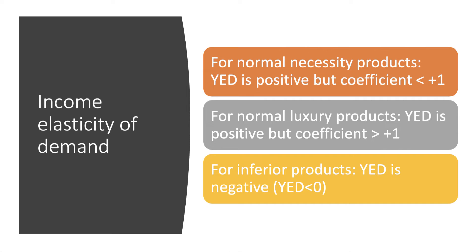For inferior goods, the income elasticity of demand is negative — examples include own-label foods, bus transport, and cigarettes. The coefficient will be less than zero. Again, an important exam point: always remember from 2019 onwards to put the signs in.